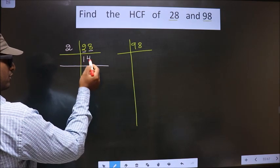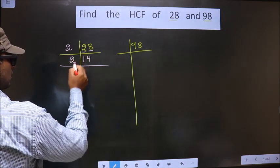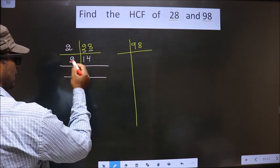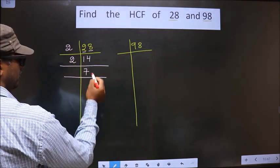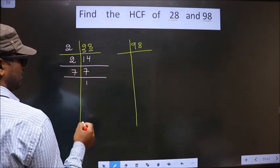Now, here we have 14. 14 is an even number, so I take 2. When do we get 14 in 2 table? 2 sevens 14. Now, 7 is a prime number, so we take 7 and 1.